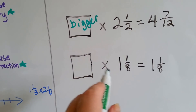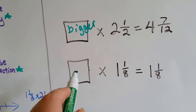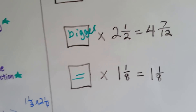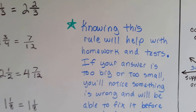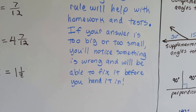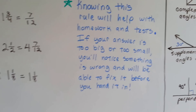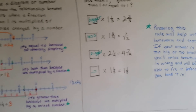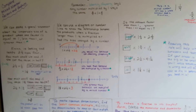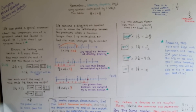How about here? Something times 1 and 1 half — the product is 1 and 1 eighth. Is this going to be bigger than 1, less than 1, or equal to 1? If you said equal to 1, you're right. And now, here's our silly little green star. Knowing these rules will help with homework and tests. If your answer is too big or too small, you'll notice something is wrong and you'll be able to fix it before you hand it in.